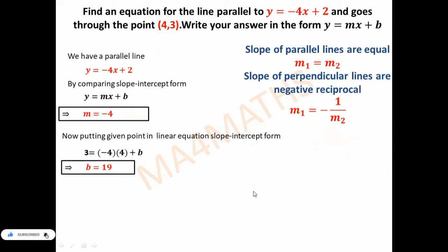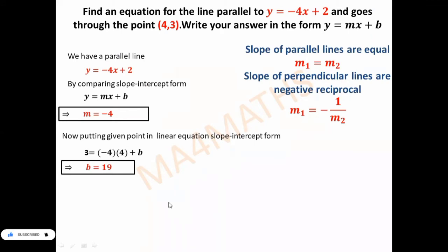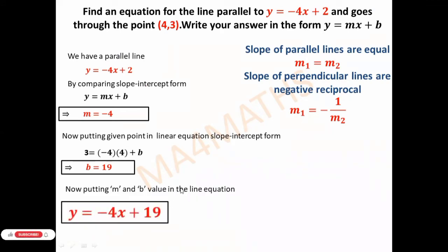We have found the value of m and the value of b. Now we put both values into the slope-intercept form. With m = -4 and b = 19, the equation of the parallel line is y = -4x + 19. I hope you got it.